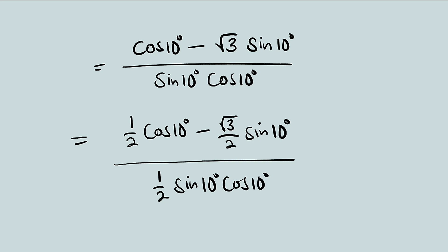Remember that from trigonometric ratios, sine of 30 degrees is the same thing as 1 over 2, and cosine of 30 degrees is the same thing as root 3 over 2. So let us go ahead and replace 1 over 2 with sine of 30 and root 3 over 2 with cosine of 30 degrees.